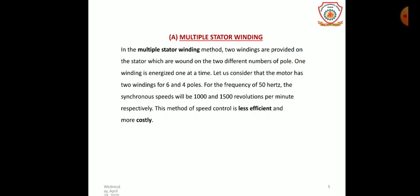The limitations of this method are: first, it can only be applied to squirrel cage motors; second, smooth speed control is not possible — only step changes in speed are possible; third, two different stator windings are required, which increases the cost of the motor and is complicated from a design point of view. Overall, this method of speed control is less efficient and more costly.